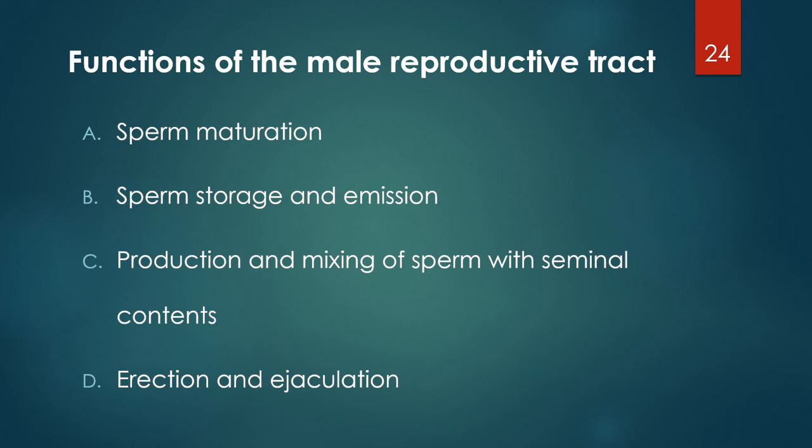The fourth function is erection and ejaculation, which is a response to a reflex arc after sensory stimulation from the penis via the pudendal nerve, with sympathetic motor stimulation to the smooth muscle of the male tract and somatic motor stimulation to the musculature associated with the base of the penis.